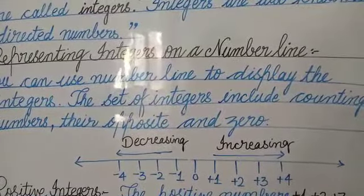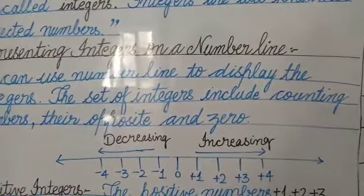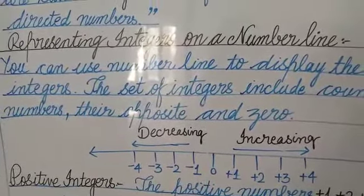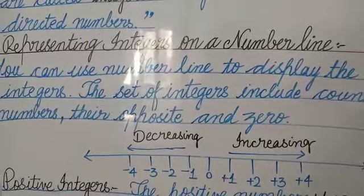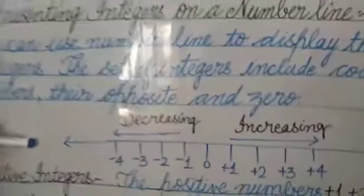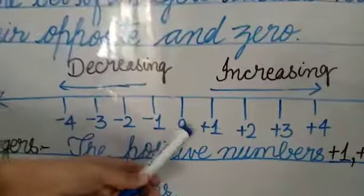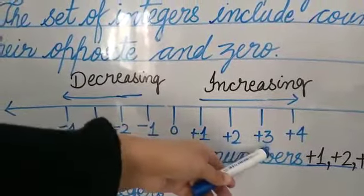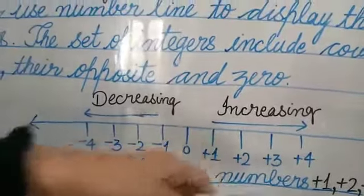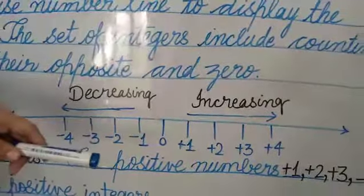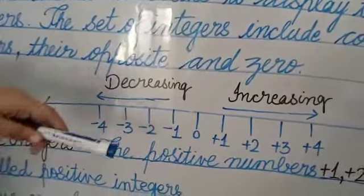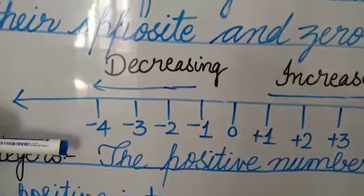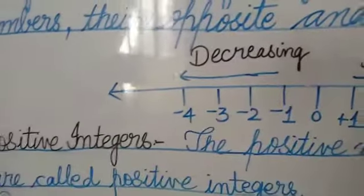The set of integers: on a set of integers, including 0, you have the set of integers. On the number line, here is 0, and going right: plus one, plus two, plus three, plus four and so on — these numbers are the increasing numbers because they lie in the positive numbers. And minus one, minus two, minus three, minus four — these numbers are the decreasing numbers.